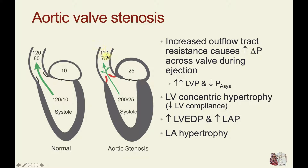Because of a slight reduction in stroke volume, the aortic pressure may be reduced — in this example, to 110. Notice that there is now a large gradient during systole between the left ventricle and the aorta, in this case 90 millimeters of mercury.